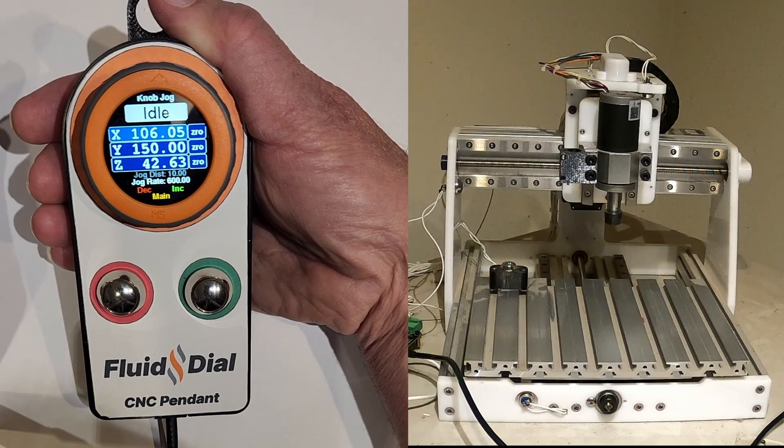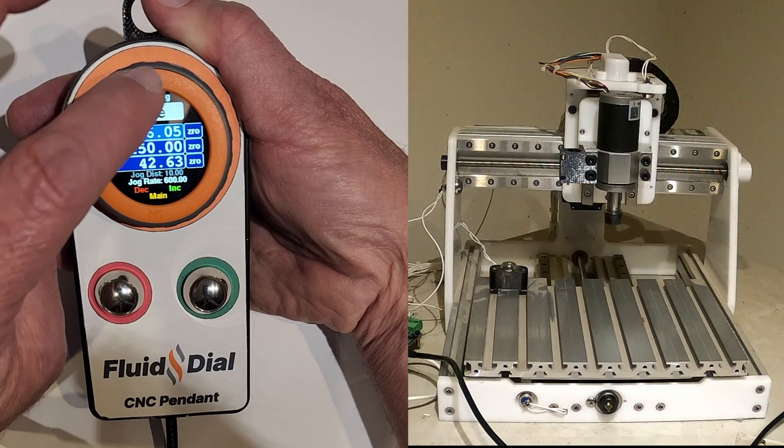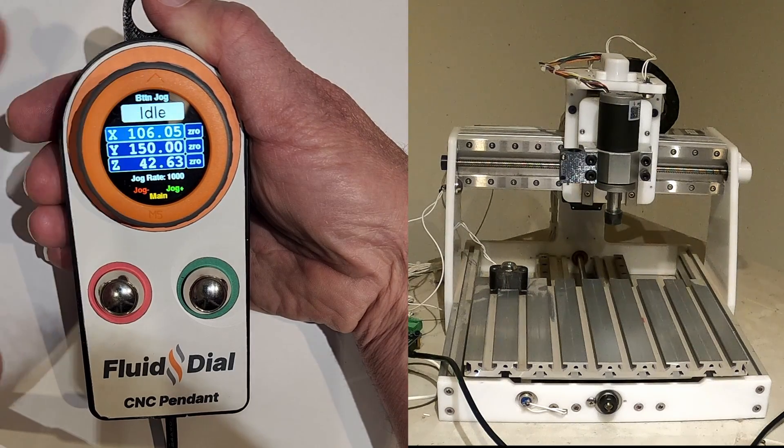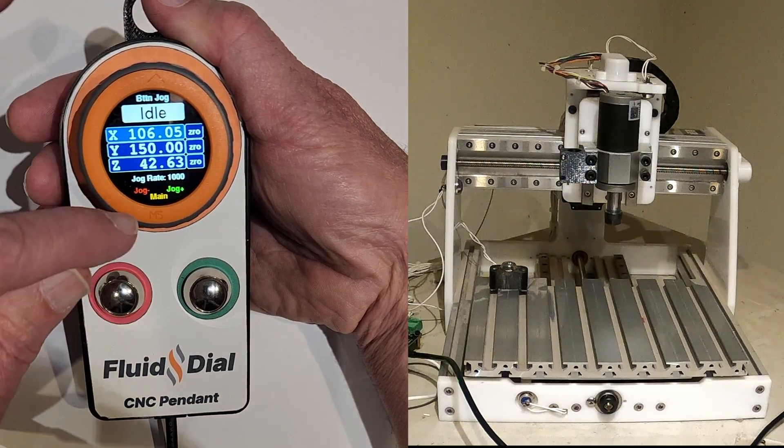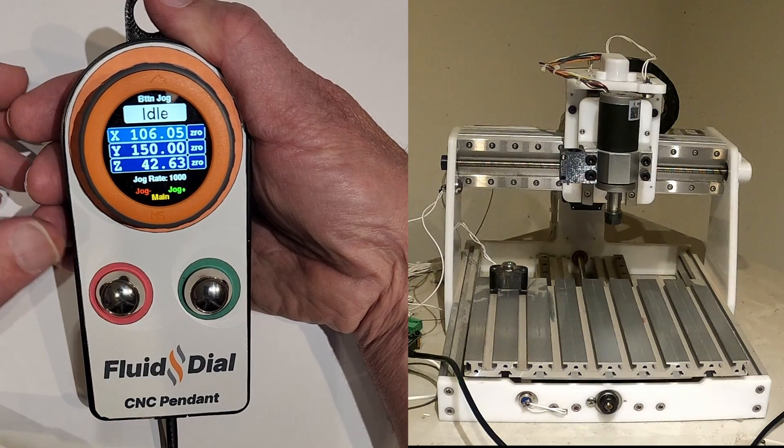Now I can switch to continuous jogging by clicking up here. It's called button jogging. Now you see the menus change to jog plus and jog minus.